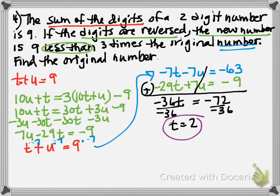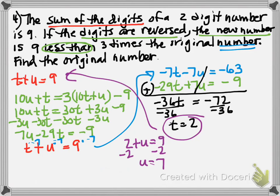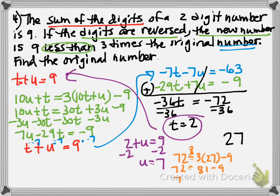Plugging T equals 2 back into T plus U equals 9 gives 2 plus U equals 9, so U equals 7. The number in place value order is 27. Checking the second equation: the reversed number is 72. Does 72 equal 3 times 27 minus 9? Three times 27 is 81, and 81 minus 9 is 72. That verifies that 27 is the correct answer. Good luck with your homework.